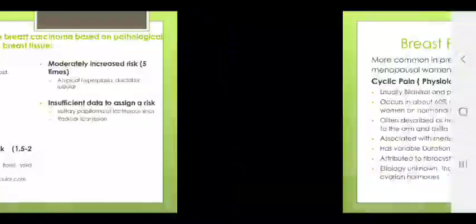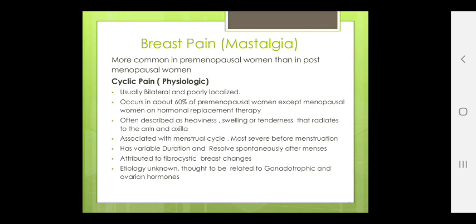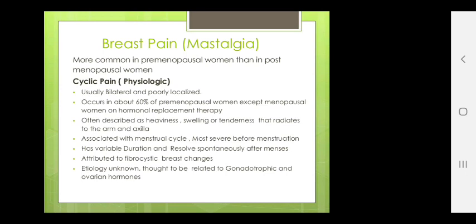Breast pain, also known as mastalgia, is most common in young and premenopausal women than in postmenopausal women. Cyclic pain, which may be physiologic, is usually bilateral and poorly localized, occurring in about 60% of women, except menopausal women on hormonal replacement therapy. Often described as heaviness, swelling, tenderness that radiates to the arm and axilla, associated with the menstrual cycle, more severe before menstruation, with variable duration, resolving spontaneously after menses, and attributed to fibrocystic breast changes.